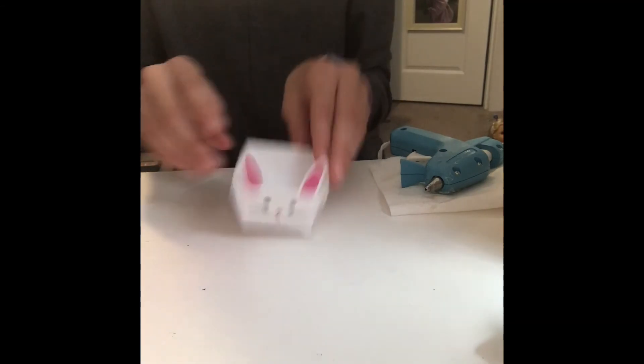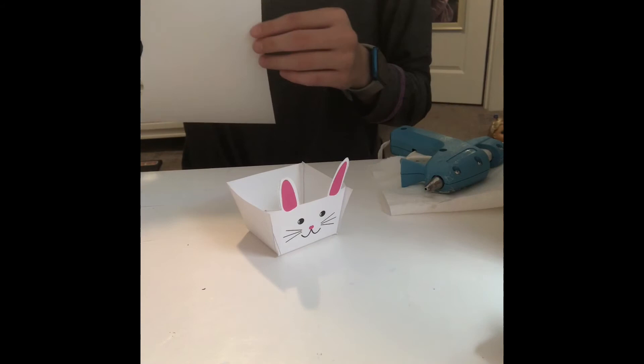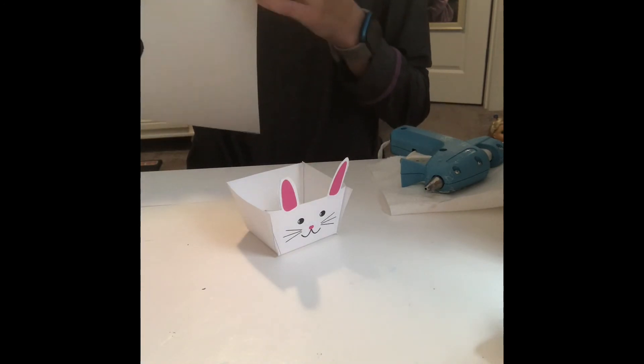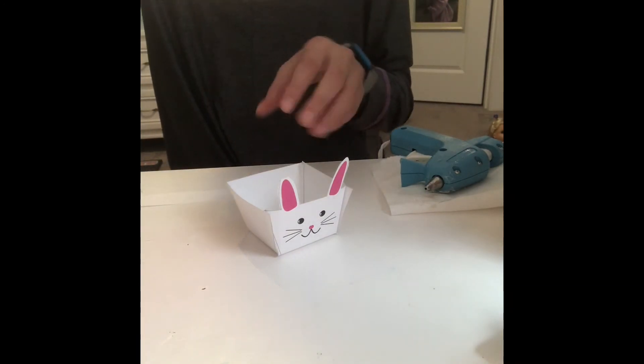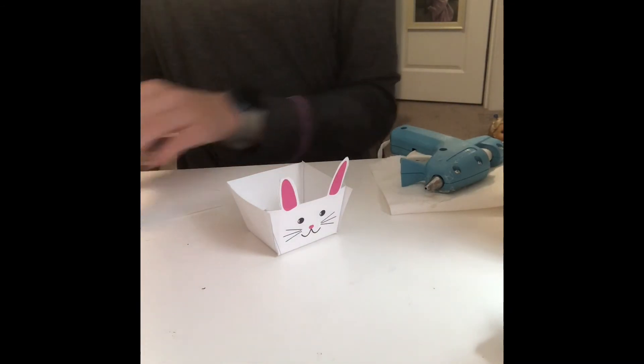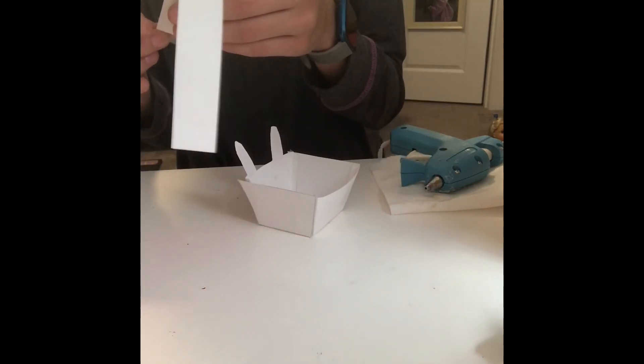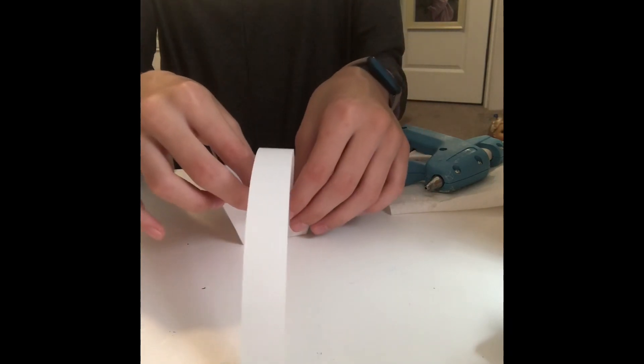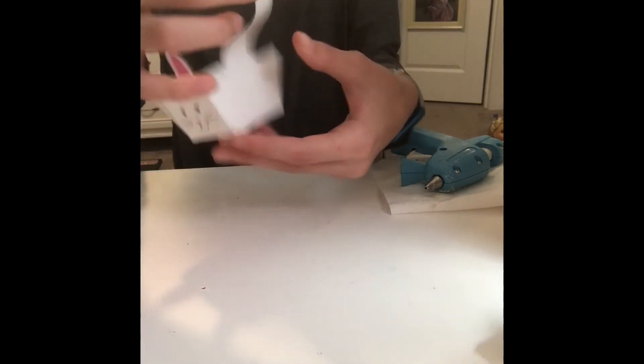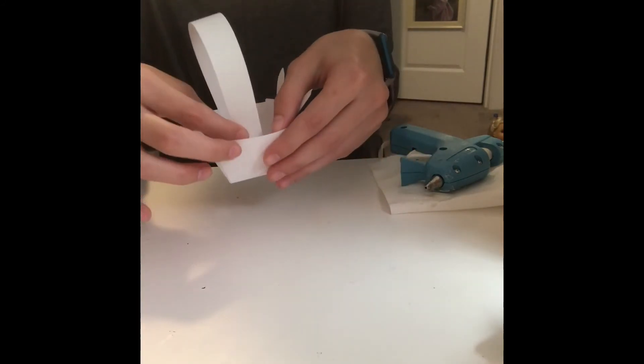Now that you have the bunny basket, you are going to turn a paper sideways and cut a little strip. It depends on how big you want your strap, but that's what I did. You're just going to tape or glue one side to either side of the basket like this. Here is the finished product.